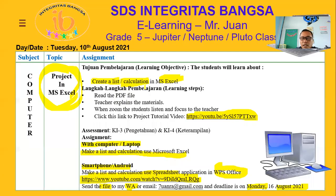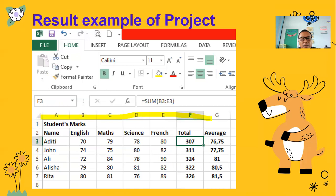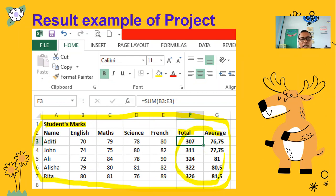Inilah nanti contoh projectnya. This is in Microsoft Excel. You type this one — kamu ketik seperti ini. Student's mark, name, English, math, science, friends, dan total average. Especially this one — khusus yang ini nanti, ini enggak diketik manual, tapi ini menggunakan rumus. This is using formula. Later I want to show you how to do it.